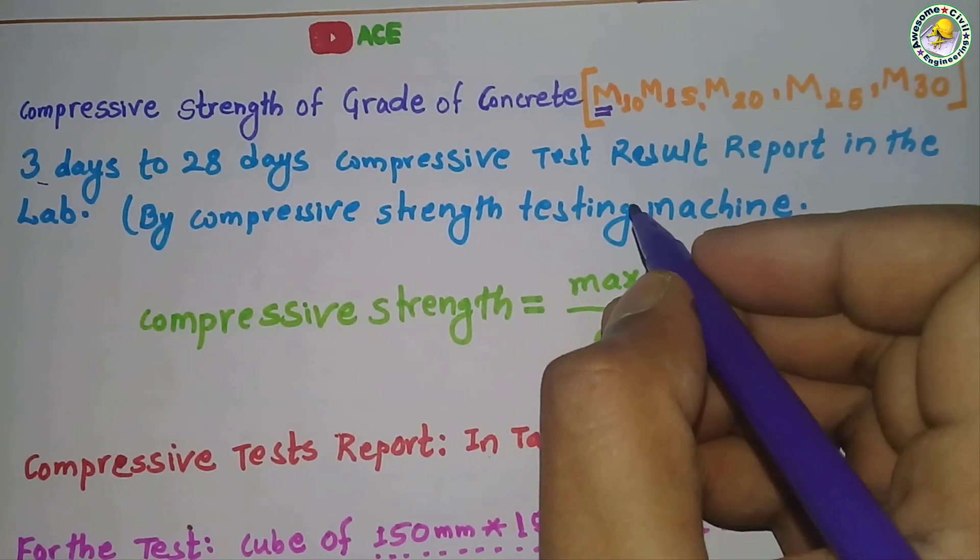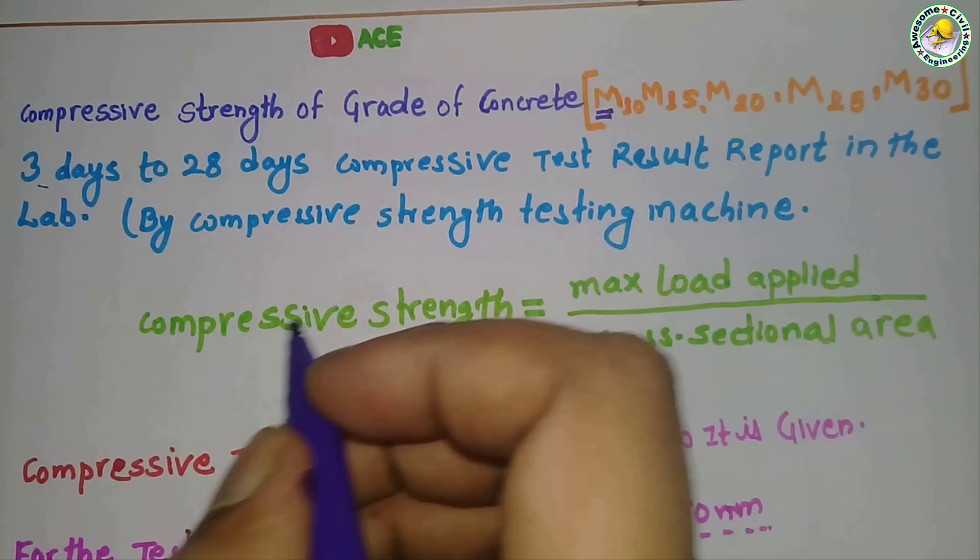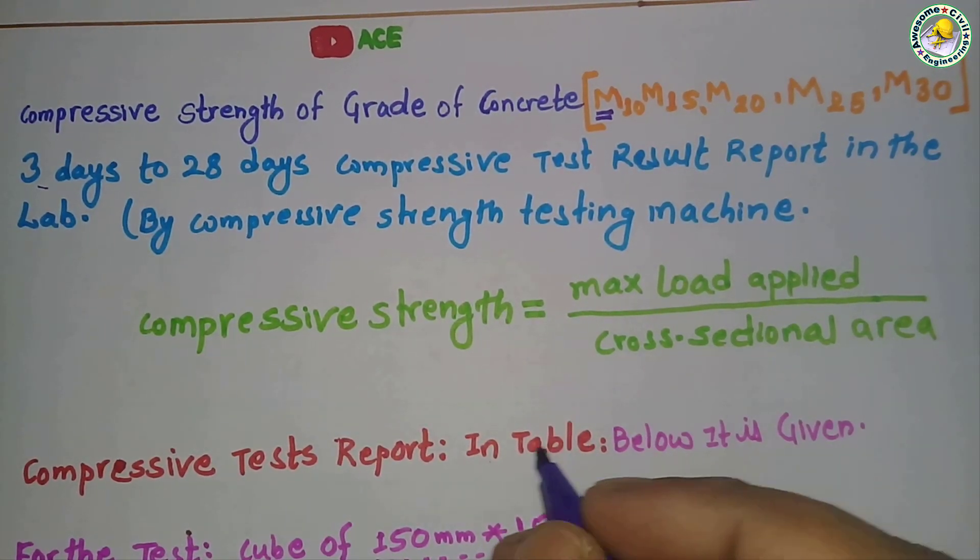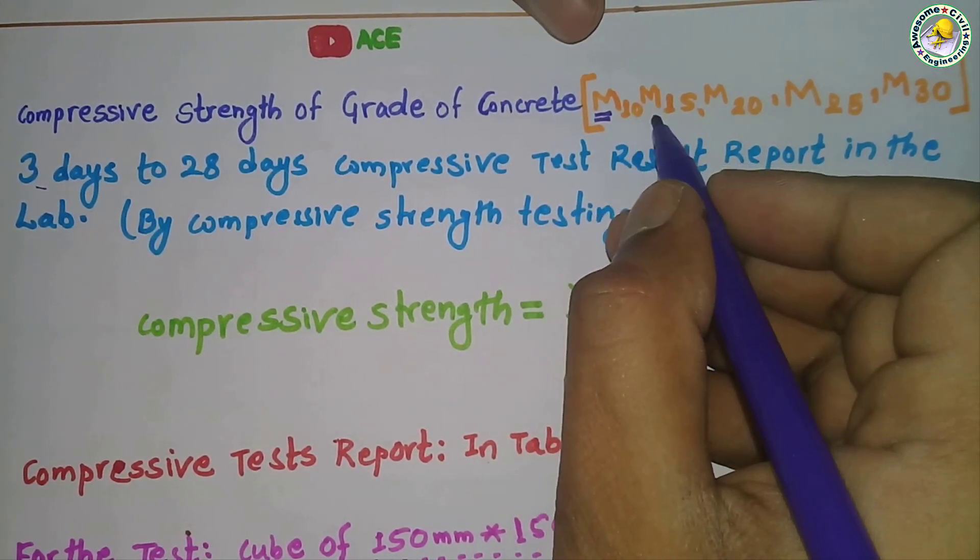This test is taken from the lab. This is the lab report I am showing to you. Now here, first of all, we have to know that M means what and these numbers mean what.